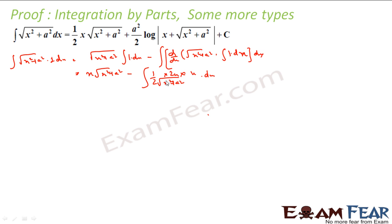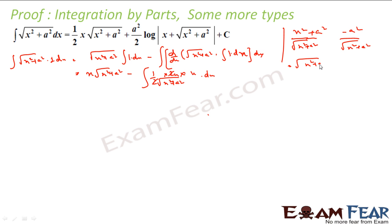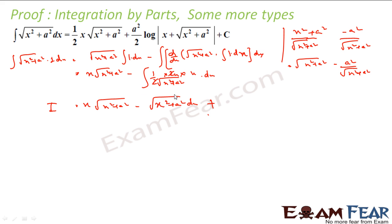We have x²/√(x²+a²). I can write this as (x²+a²)/√(x²+a²) − a²/√(x²+a²), which simplifies to √(x²+a²) − a²/√(x²+a²). So: I = x·√(x²+a²) − ∫√(x²+a²) dx + ∫a²/√(x²+a²) dx.